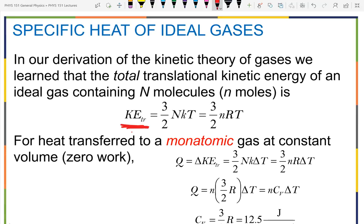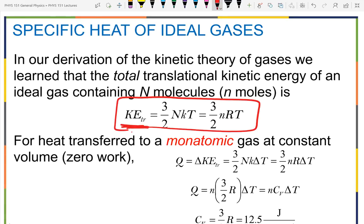That derivation was specifically for translational kinetic energy — it's not the only kind possible. For a monatomic ideal gas, like helium, molecules are single atoms that only have translational kinetic energy. So if you put heat in, it simply increases the kinetic energy: Q equals the change in KE. Taking the kinetic energy equation, since N doesn't change, only temperature changes, so heat equals three-halves nR ΔT.